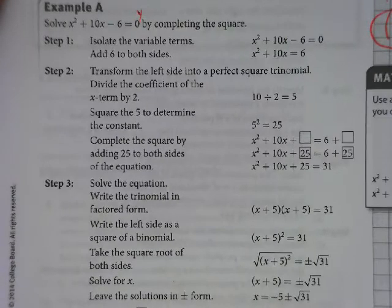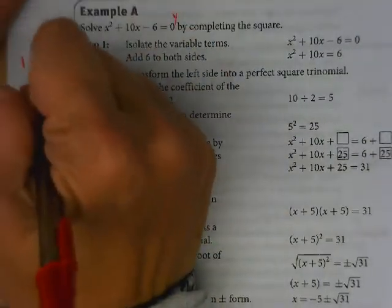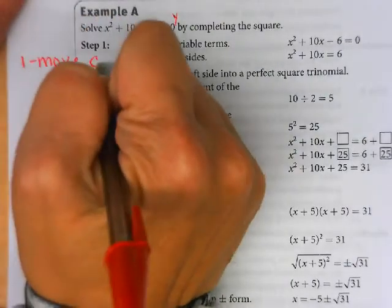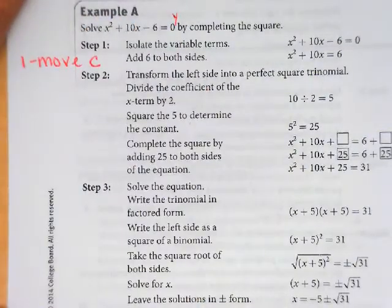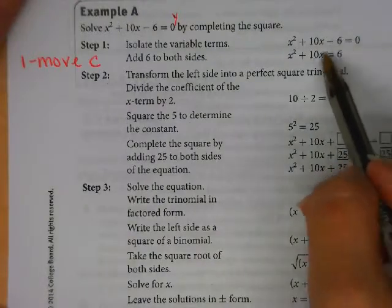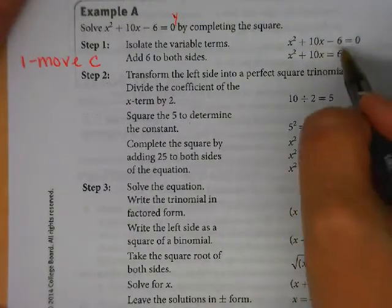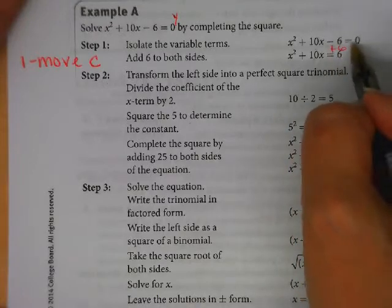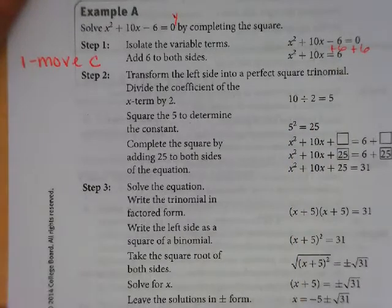We're going to translate that into step one is move C. So that's what they did. If we're isolating the variable terms, we're just moving C. They went plus six here. They went plus six here. Are you with me so far?